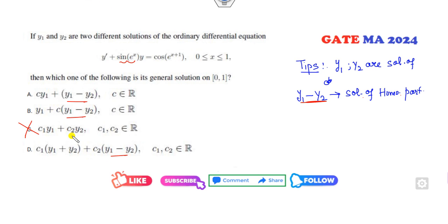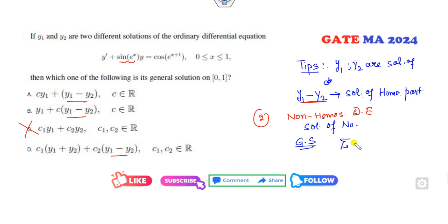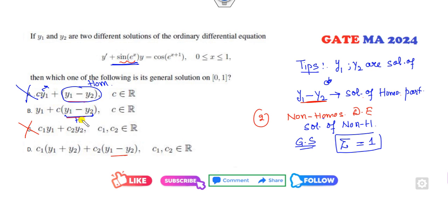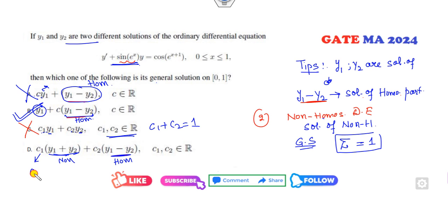The shortcut tip: for a non-homogeneous differential equation, the general solution requires that the sum of the coefficients of the non-homogeneous particular solutions must be 1. Looking at the options: the option where y1 is the solution of the non-homogeneous part and the coefficient is 1 — that is the correct answer. Where both y1 and y2 are solutions of the non-homogeneous part but coefficients don't sum to 1, those options are cancelled. B is the right answer.